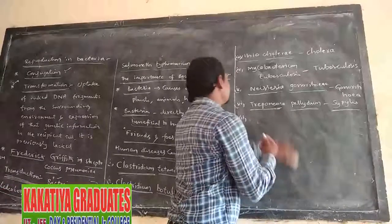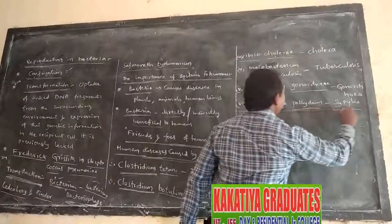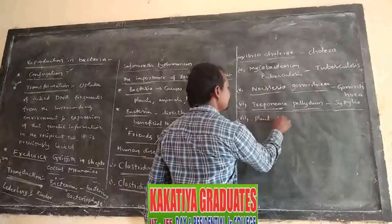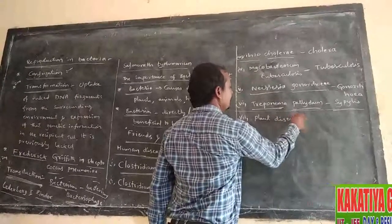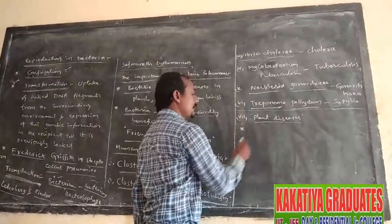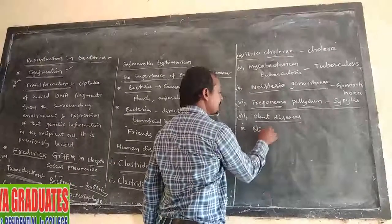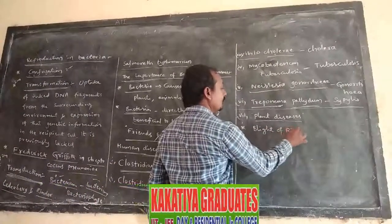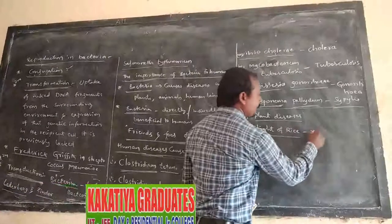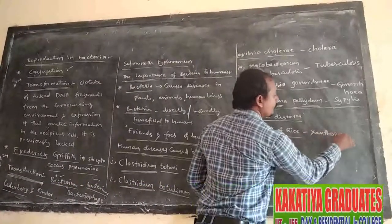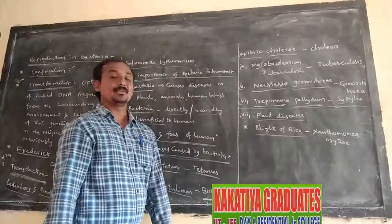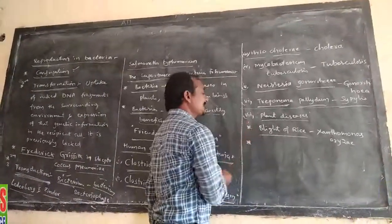These are some human diseases caused by bacteria. Now, plant diseases caused by bacteria. First one: Blight of rice. Blight of rice is caused by a bacteria called Xanthomonas oryzae. Xanthomonas oryzae is a bacteria; it causes blight of rice in rice plants.